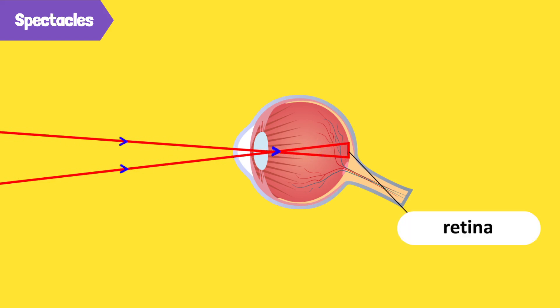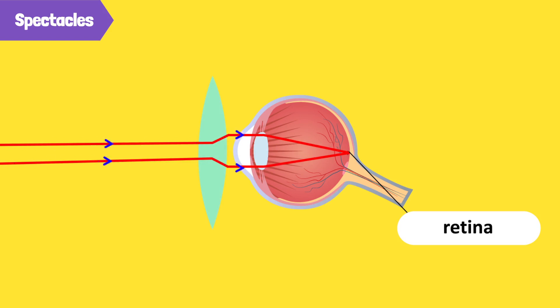For this sort of problem, my glasses are made of convex lenses. These bend the light towards the bottom and top of the lens, thus pushing the focal point back towards the retina, and allowing me to see.